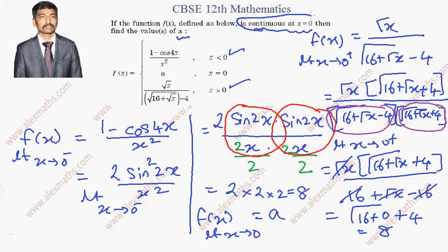Since the function is already given as continuous at x equals 0, all the three values should be same. That is, the first value what we got is 8, this is equal to a, and this is equal to 8. Finally, the value of a is 8.